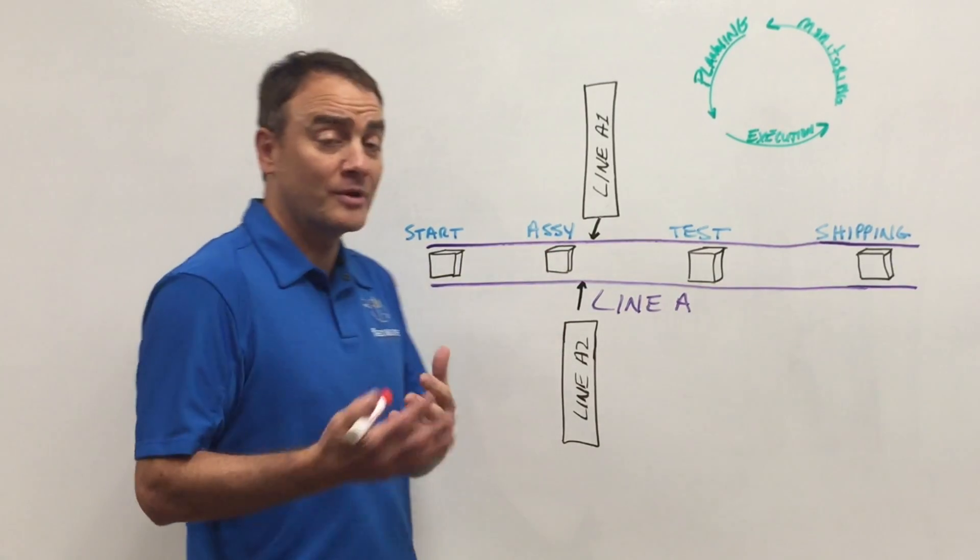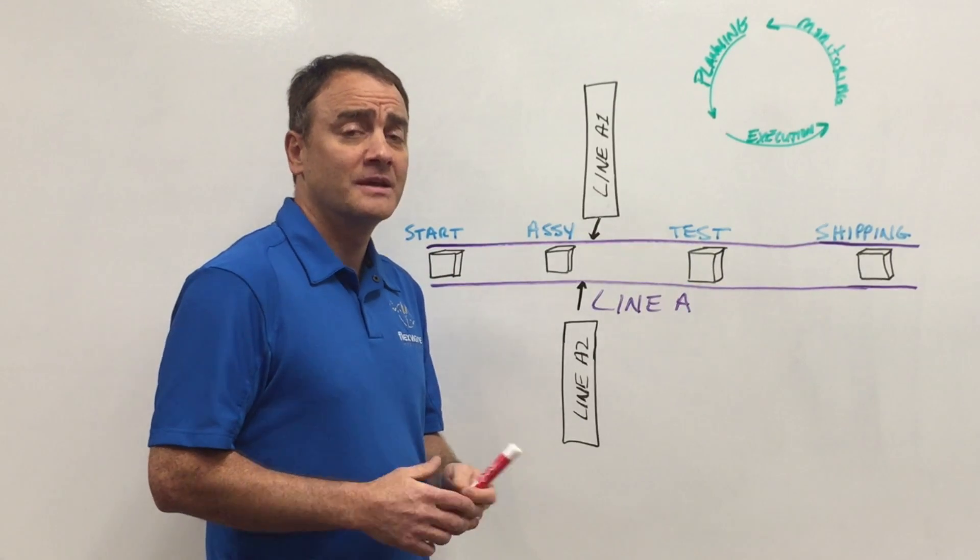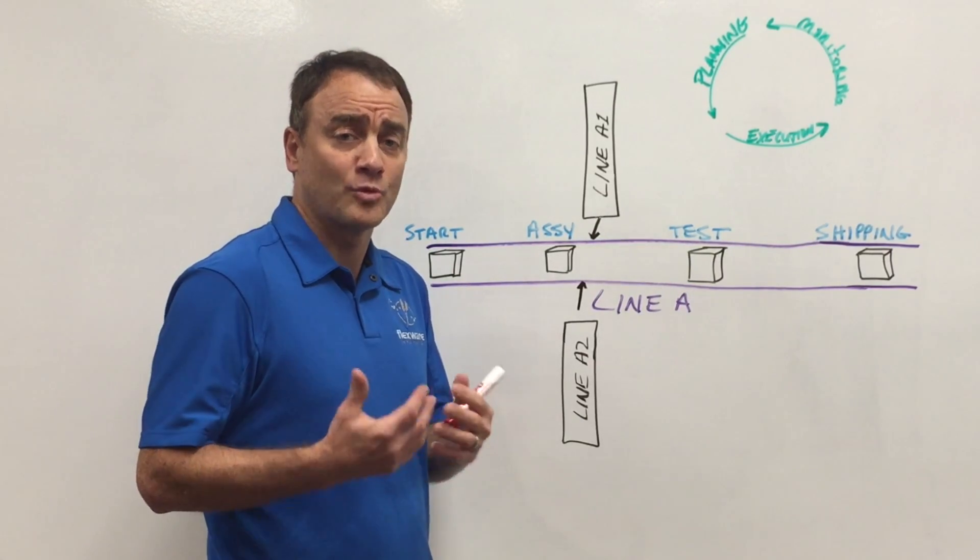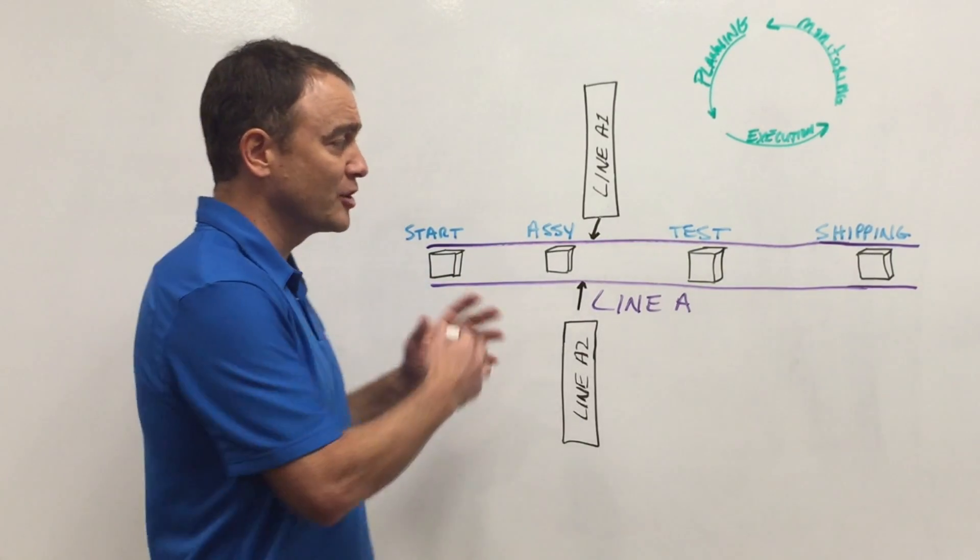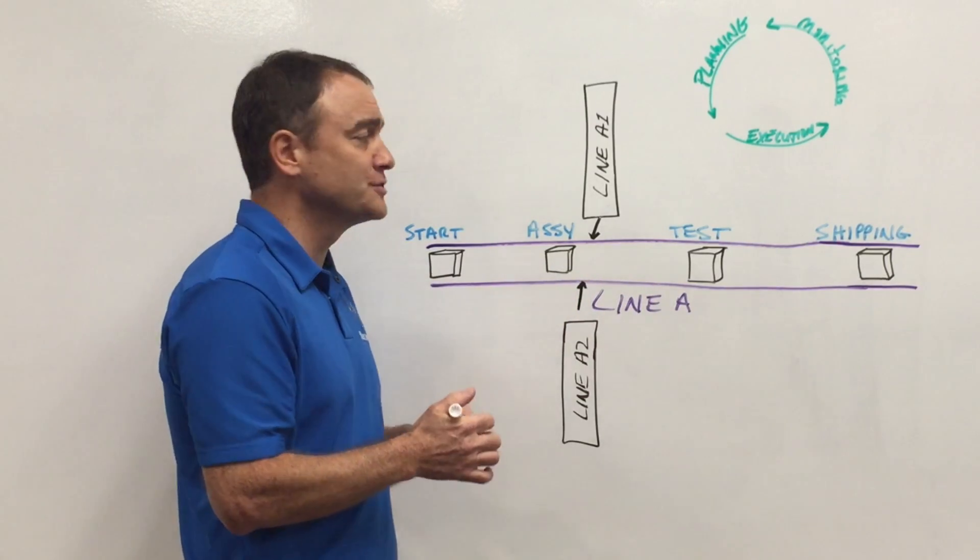So what is the MES system? It's really an electronic system. It helps us become paperless, more efficient, and really error-proof, and collect data in a much more efficient way.